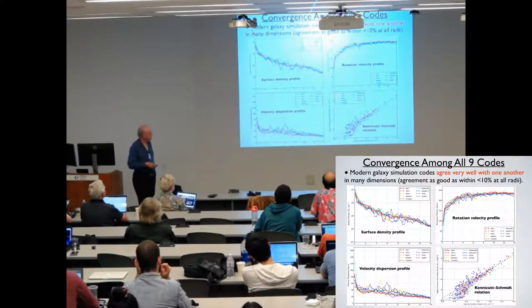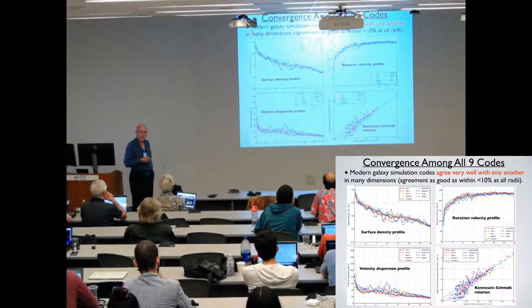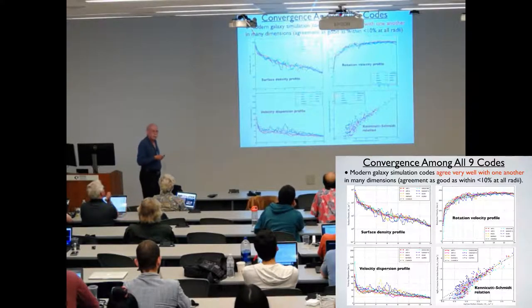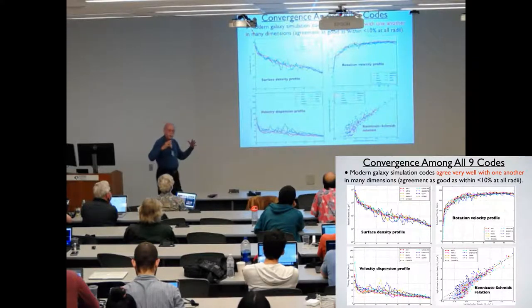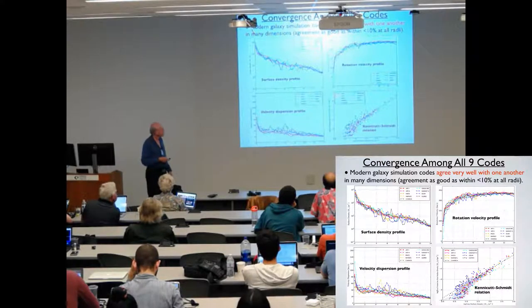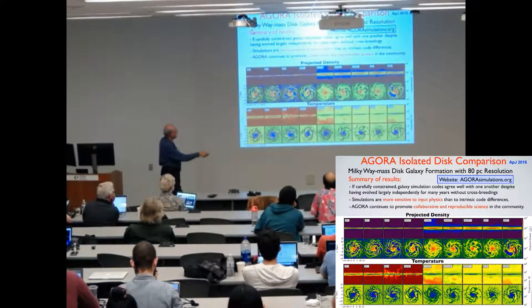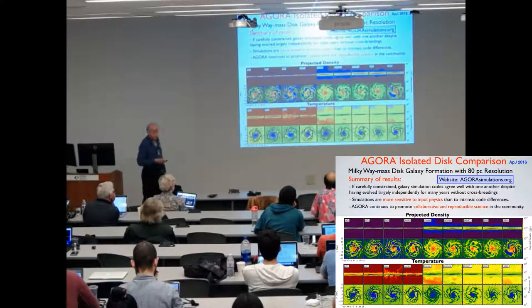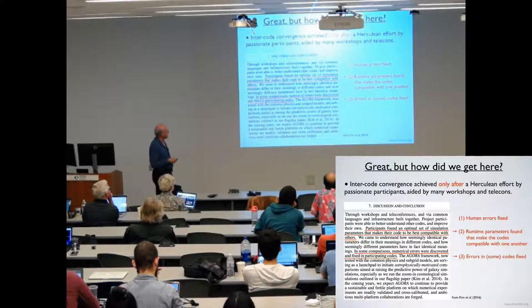And the overwhelming thing that I think we deduced is to a much greater extent than I think any of us expected before we started this, these nine different codes that really have very different backgrounds, hardly any direct evolution where the teams that develop the codes really work carefully together. But despite that, the results are remarkably similar. So the codes agree very well with one another in many dimensions. There were some interesting differences, and you can see some here in the vertical structure, for example. But this was actually remarkably reassuring.